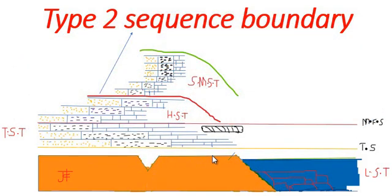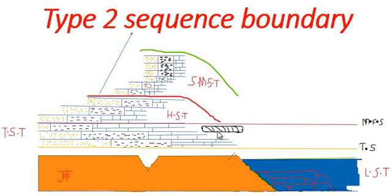Both Type 1 and Type 2 sequence boundaries are formed during progradation, during seaward migration of terrestrial facies. However, in the case of a Type 1 sequence boundary, the sea level falls below the shelf break, while for a Type 2 sequence boundary, the sea level must not fall below the shelf break.